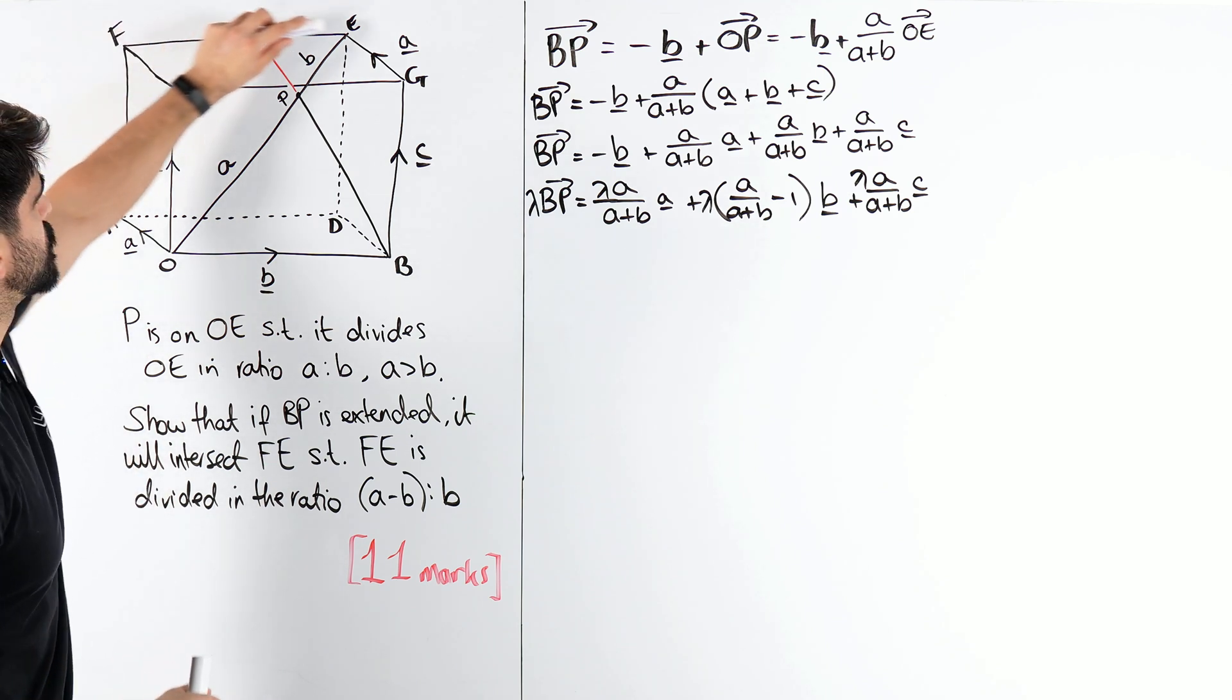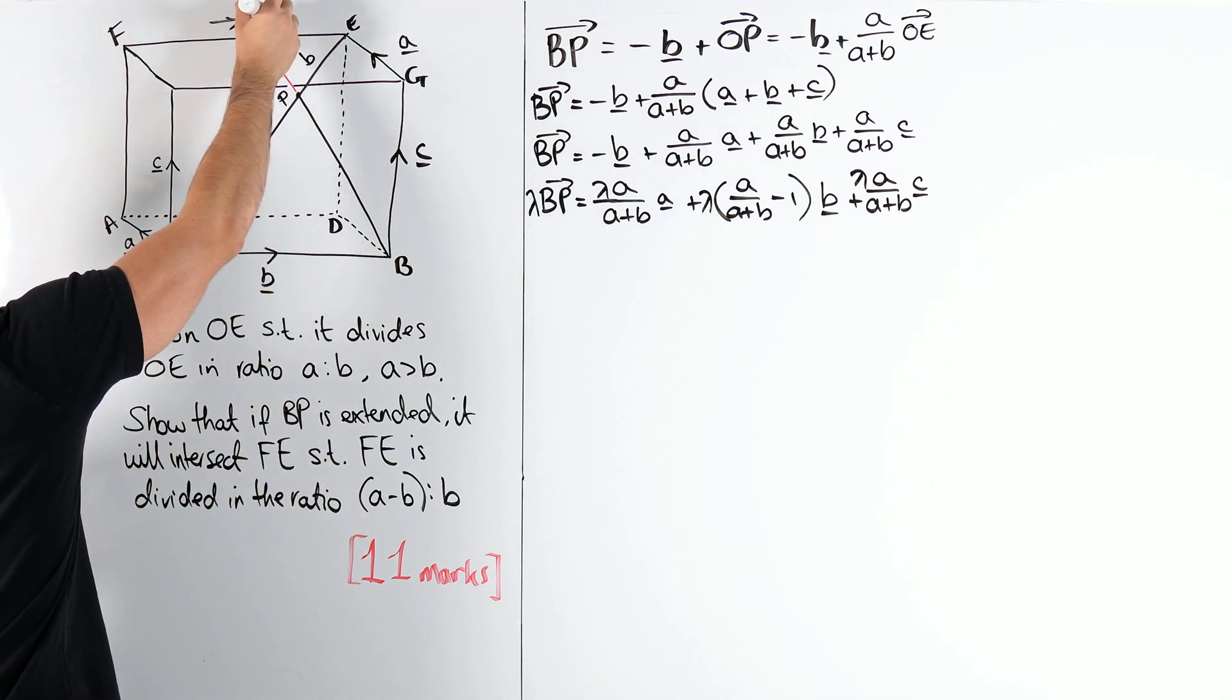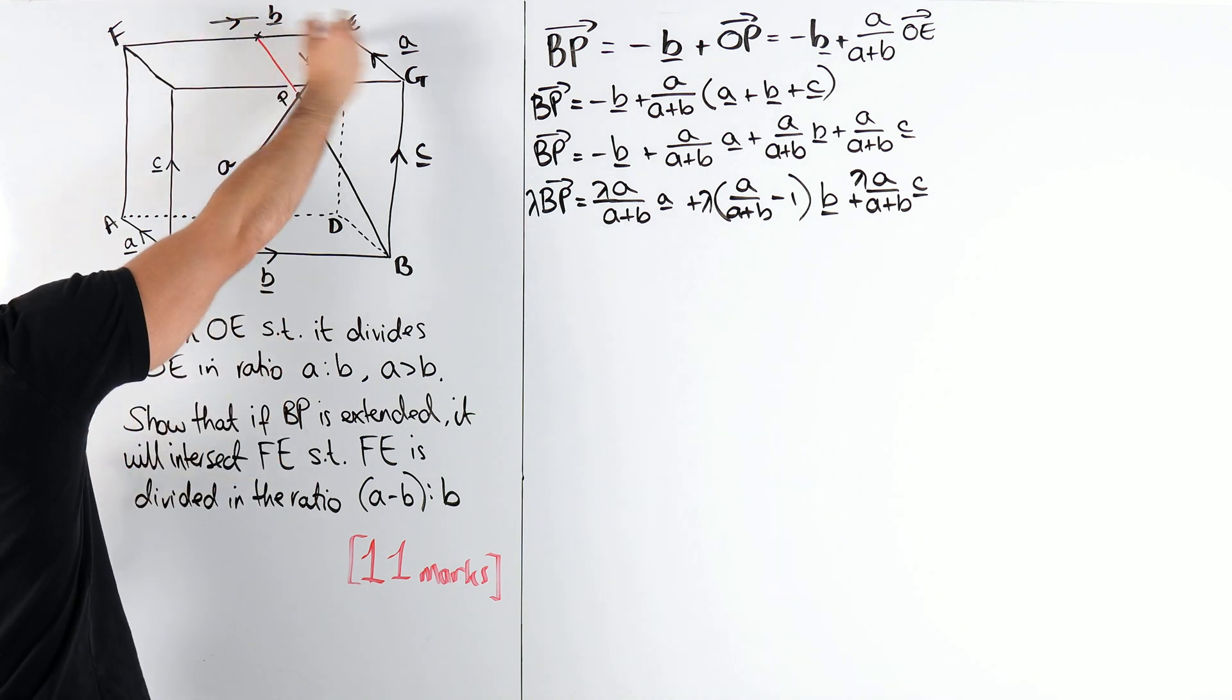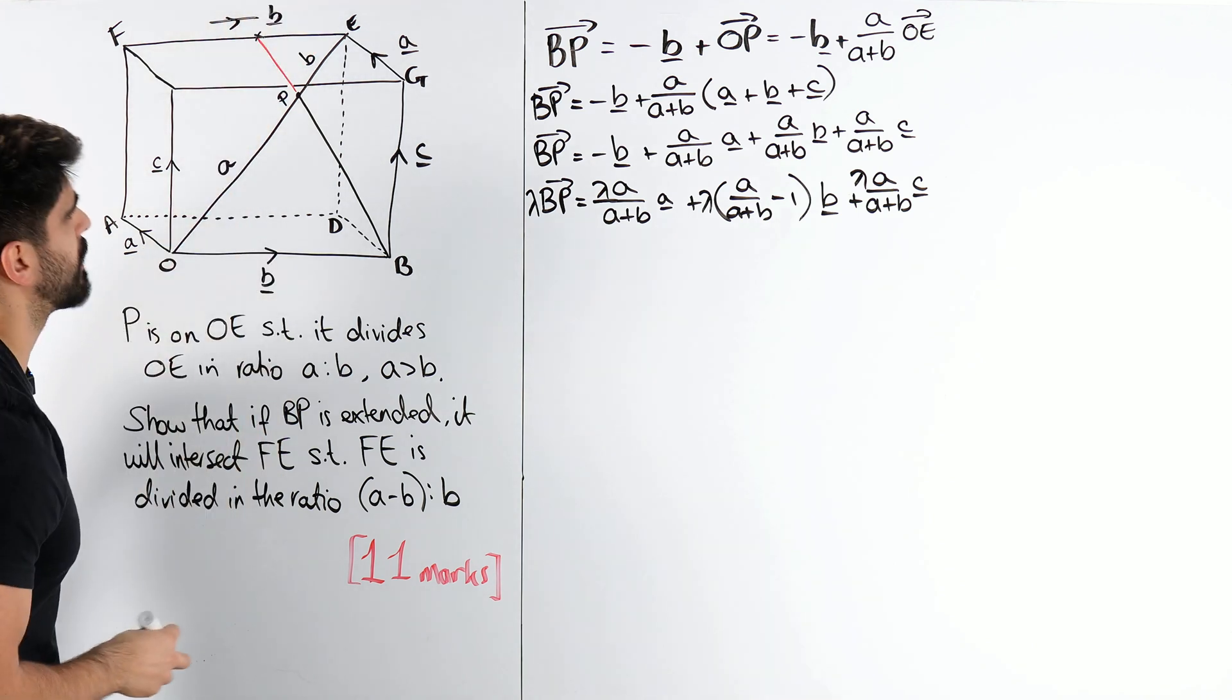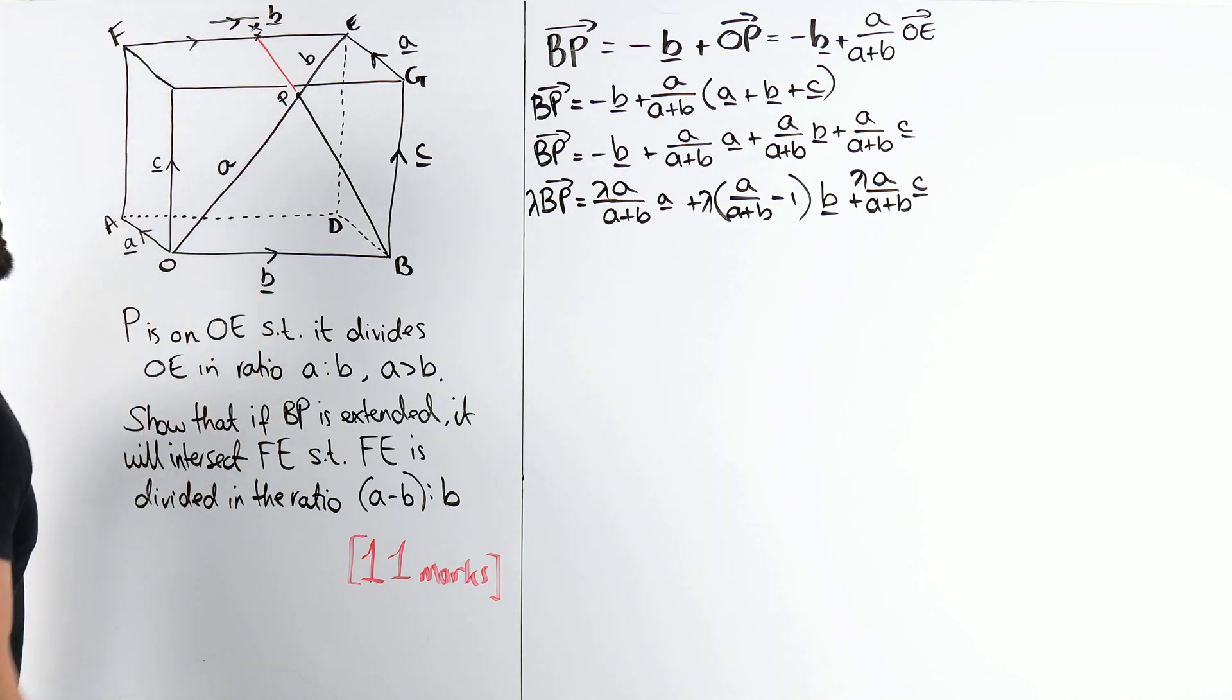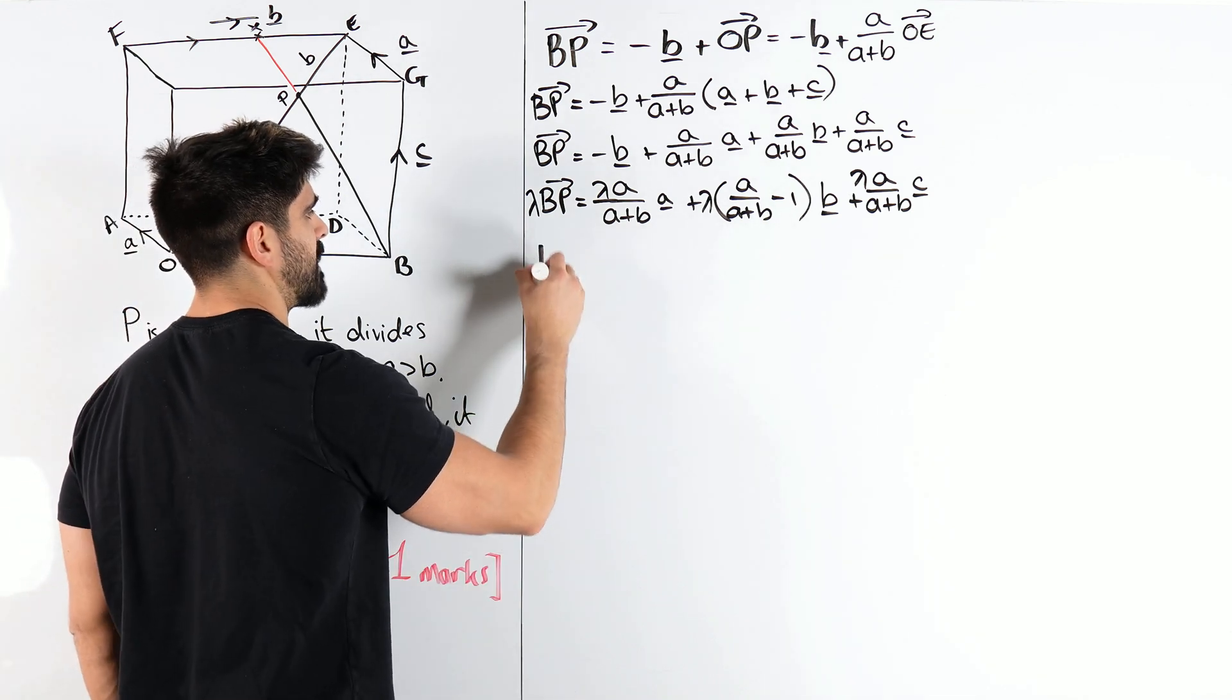Well, I know F to E is B. Okay? So, I know this direction here is just the vector B. And my pen's a bit messy here. Yeah? So, this vector here is B. So, if I could, I don't know, what should we call that point? X marks the spot. If I can work out the vector FX, I could say it's parallel to B, and that's going to help me work out lambda. Okay? So, let's work out FX, sound effects in that.